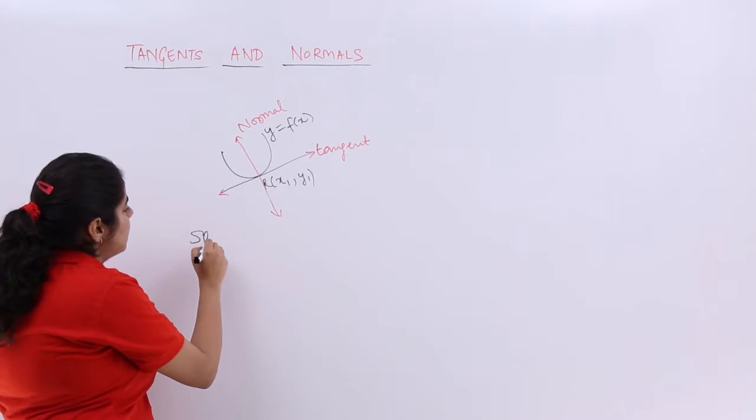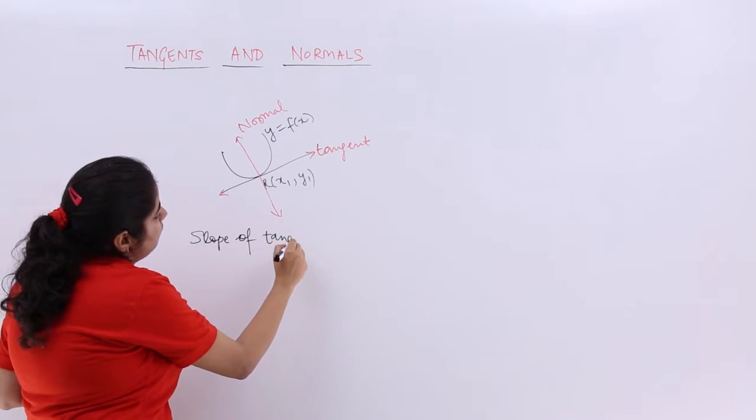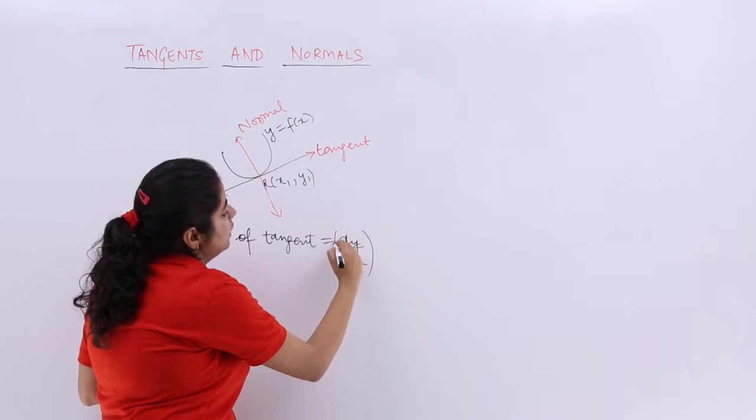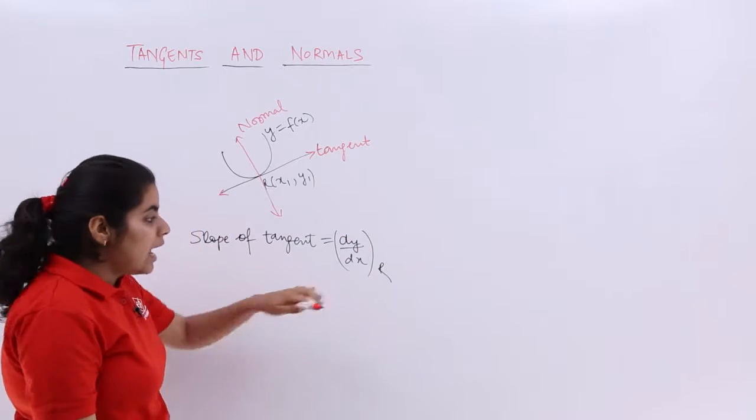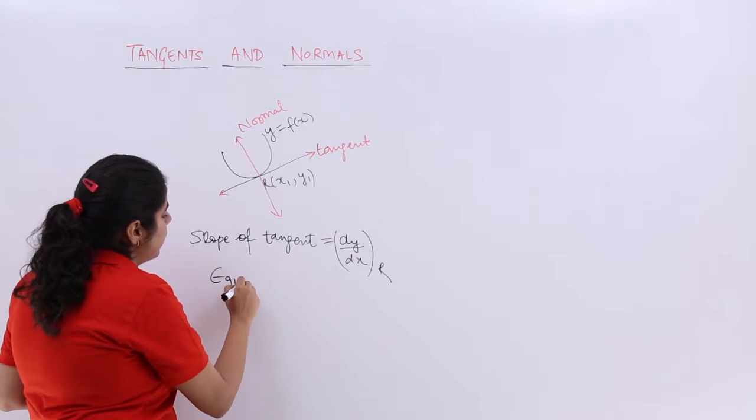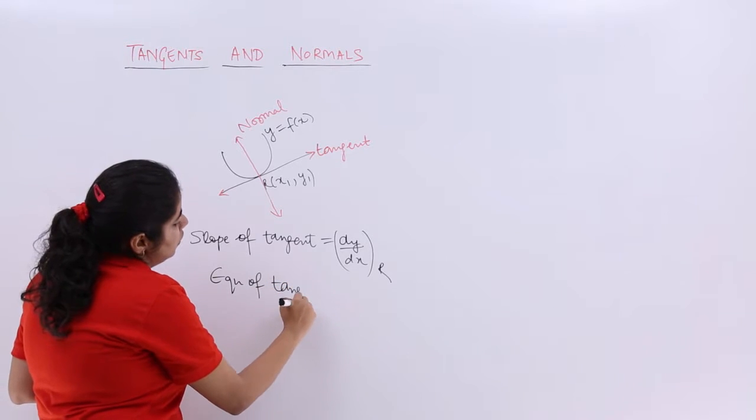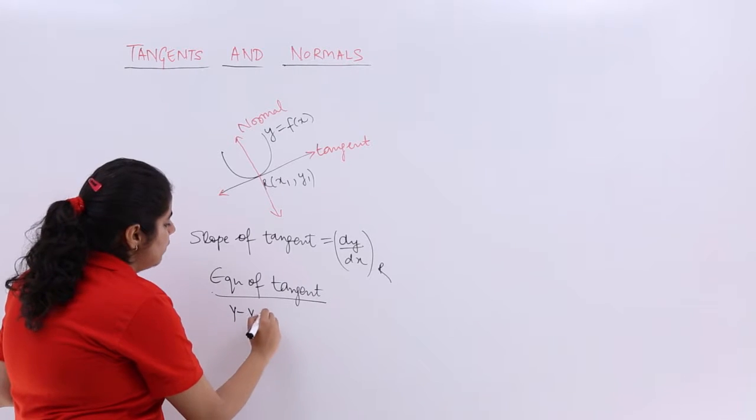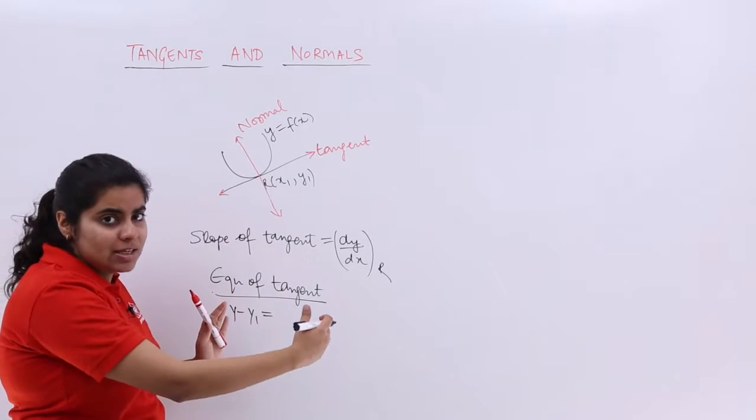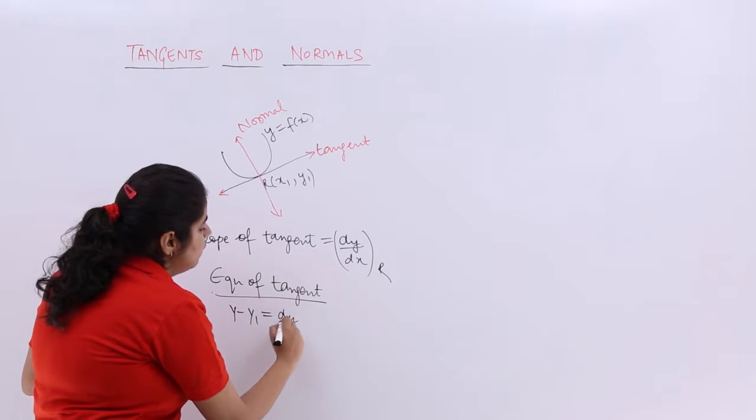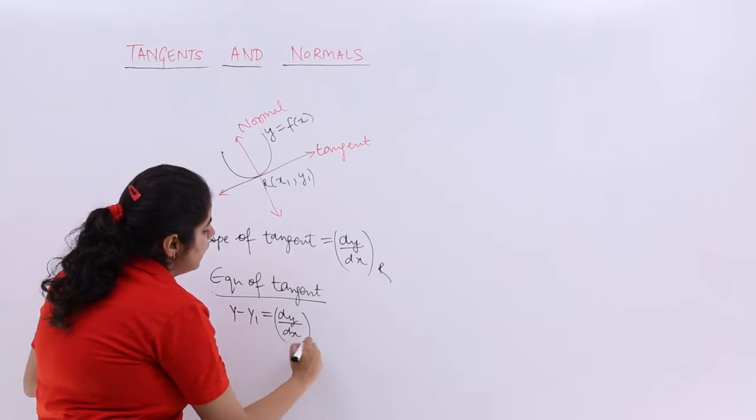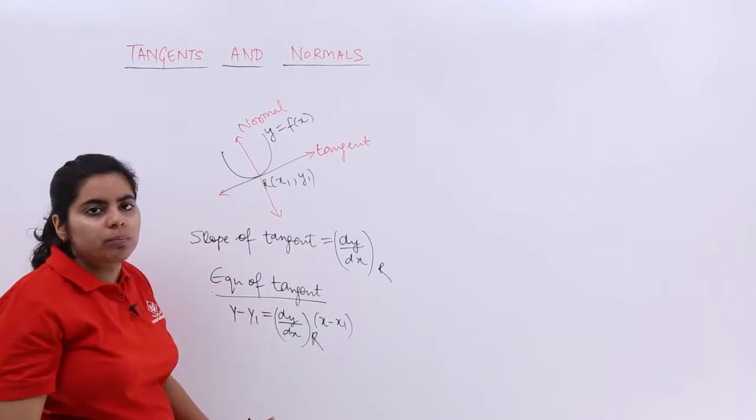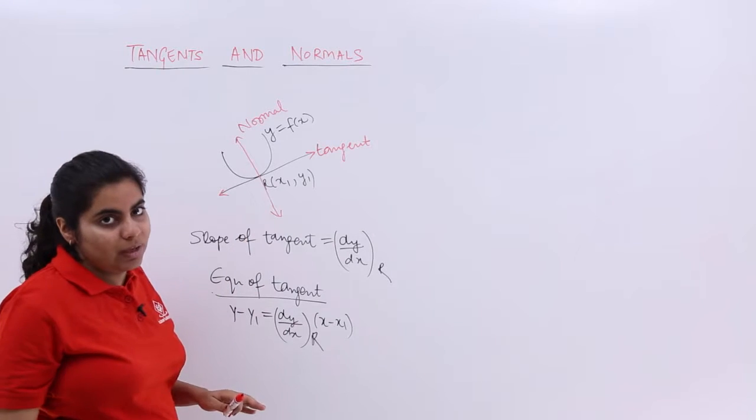So I can say that my slope of tangent is nothing but dy/dx at point r. And if that is the case, directly you can write equation of tangent. Equation of tangent has to be y-y₁ equals m(x-x₁) where m is the slope. So that is dy/dx at r times (x-x₁), where x₁,y₁ are the coordinates of the point r.